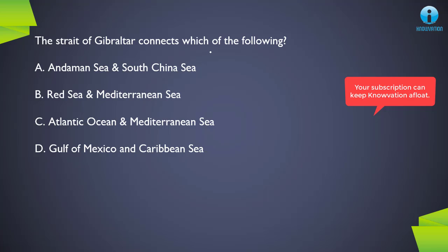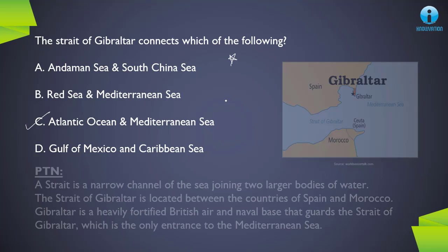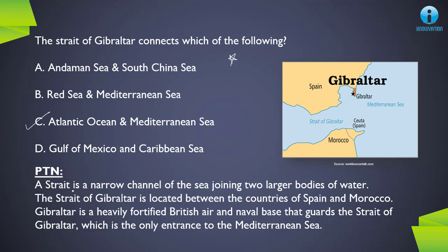Next question: the Strait of Gibraltar connects which of the following? The correct answer is C, Atlantic Ocean and Mediterranean Sea. A strait is basically a narrow channel or passage which joins two large water bodies. The Strait of Gibraltar is located between Spain in Europe and Morocco in Africa. The place called Gibraltar is controlled by Britain or UK, which has naval and air bases there — making it a very fortified position. This passage is the only entrance to the Mediterranean Sea and sees very heavy sea-route traffic, making it strategically important for Britain.